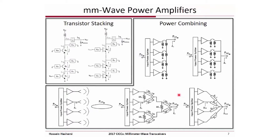Millimeter wave power amplifiers are a very big challenge because high output power cannot be achieved at these frequencies due to the low breakdown voltage of transistors. To increase output power, there are two approaches. One is transistor stacking, where multiple transistors are placed in series to achieve a higher voltage swing at the load. Alternatively, there are power-combining schemes including transformer-based current and voltage combining, Wilkinson power combining, transmission line-based current combining, and spatial power combining, which is particularly attractive at millimeter waves because antenna size reduces with frequency.